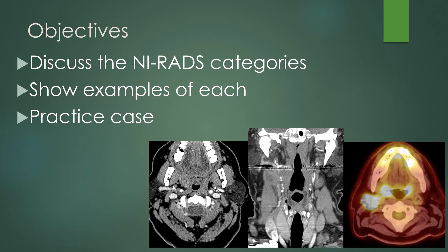The objectives of this talk: we're going to discuss the NIRADS categories, show examples of each, and do a practice case at the end. Here is an example of something I see all the time — a mass involving the right palatine tonsil with right level 2 lymphadenopathy, showing hypermetabolism on PET scan.